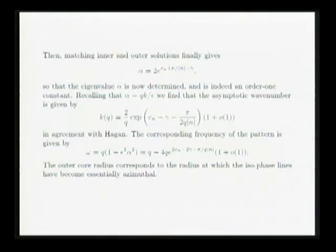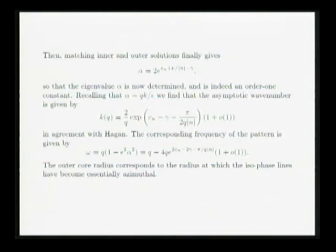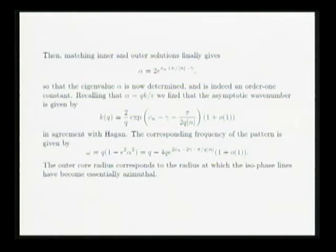Once you choose — so that now fixes what epsilon is in terms of q — you can carry on with the matching procedure, and what you finally get is a formula for what this coefficient alpha is, this unknown eigenvalue. It turns out to be order 1 by construction, because that's what determined epsilon. When you undo all the changes of variable and go back to what is the asymptotic wave number as a function of q, you find it's exponentially small in q. As q goes to zero, k goes to zero exponentially. This agrees with what Hagen got, and you can also work out the corresponding frequency of oscillation of the spiral.